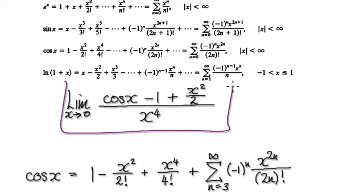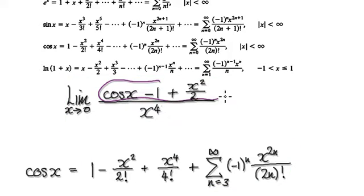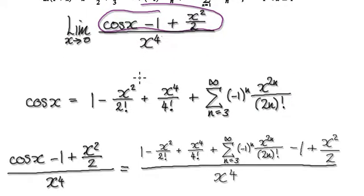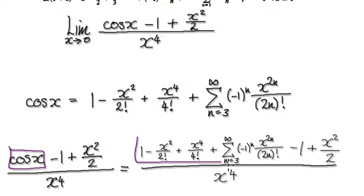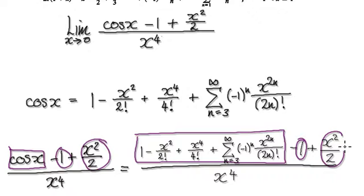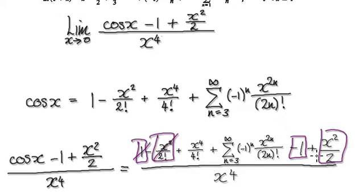We are trying to find the limit of this. Rewrite cos x as that expression. Now looking at the numerator: cos x is this whole series, and then you've got your minus 1, minus 1, and then plus x squared over 2, x squared over 2. These terms cancel out with each other, and then you divide this block by x to the power of 4.